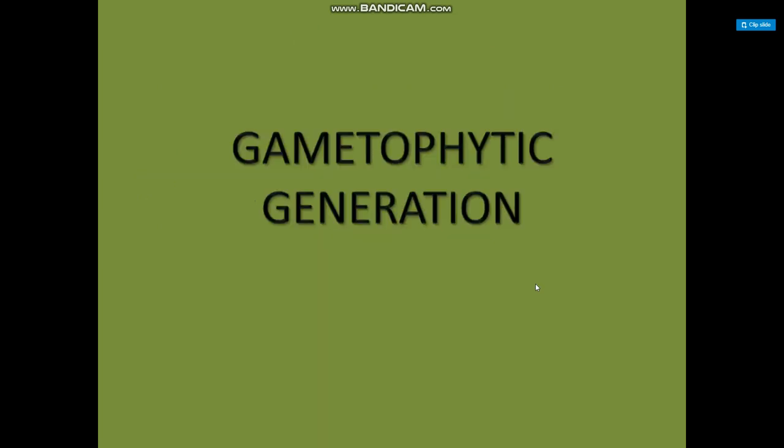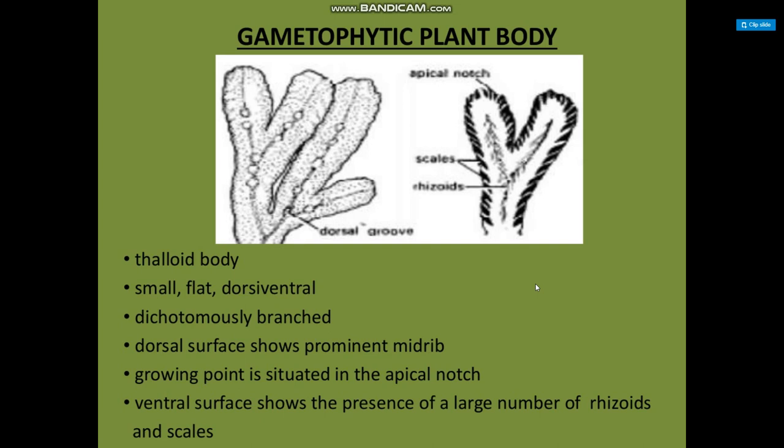Gametophytic generation: it has a haploid body. It is small, flat, dorsiventral, dichotomously branched, and shows a prominent midrib on the dorsal surface. The growing point is situated in the apical notch.